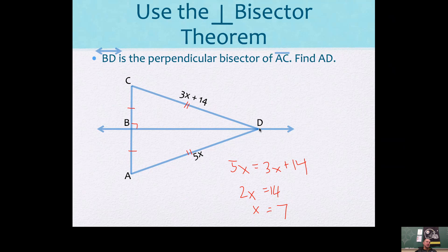Now, they want the distance from A to D, so make sure you answer that question. A to D is 5 times x. So it's 35.